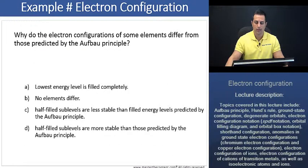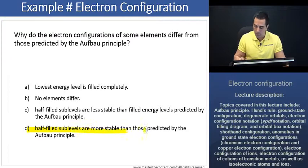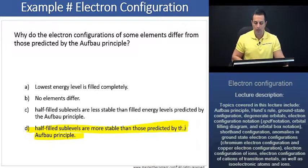Here we're being asked: Why do the electron configurations of some elements differ from those predicted by the Aufbau principle? A, lowest energy level is filled completely. B, no elements differ. C, half-filled sublevels are less stable than filled energy levels predicted by the Aufbau principle. Or D, half-filled sublevels are more stable than those predicted by the Aufbau principle. This answer is pretty straightforward. It's going to be D, and there we are. Now let's move on to our next slide.